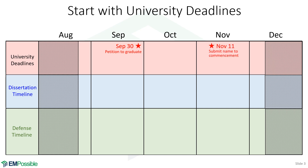There is a November 11 deadline — this is the latest possible date where you can submit your name for commencement. November 18 is your deadline to defend; if you defend after that, you're going to graduate the next semester. December 2 is the deadline to submit your final dissertation to the university, and if you submit December 3, you're graduating in the following spring. And last, December 10th is commencement.